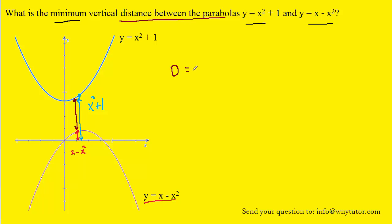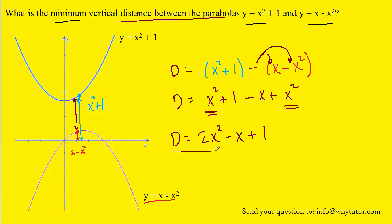In other words, the distance between the parabolas would be equal to x squared plus 1 minus x minus x squared. Now we can simplify this equation by distributing the minus sign into the parentheses and then combining the like terms. So here we have the most simplified version of the equation that represents the distance between the two parabolas.